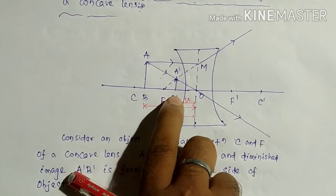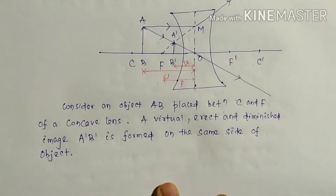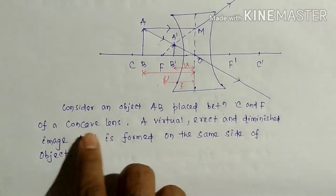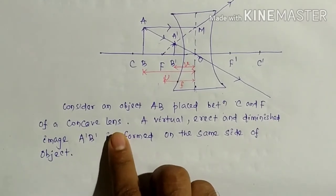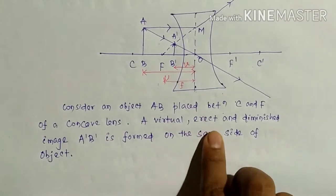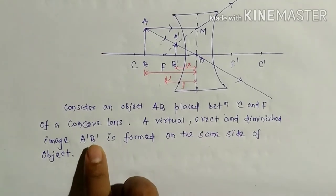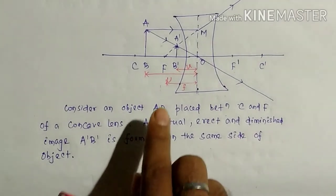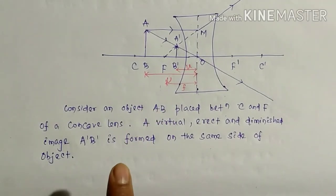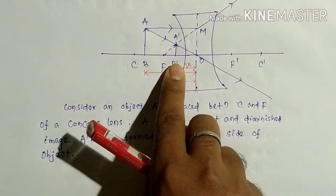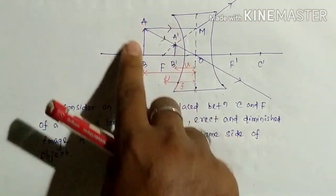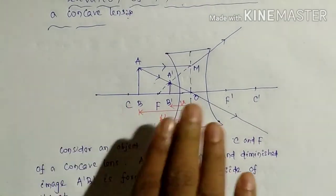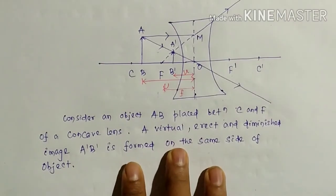Consider an object AB placed between C and F of a concave lens. A virtual, erect, and diminished image A'B' is formed on the same side as the object. This is all about the image formation.